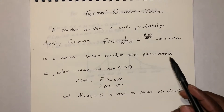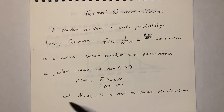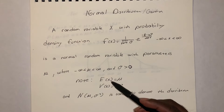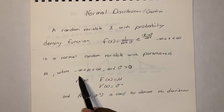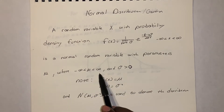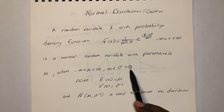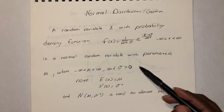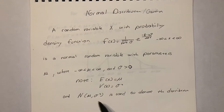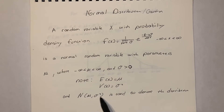This is a normal random variable with parameters μ (the mean, or expected value), where μ is between negative infinity and positive infinity, and σ is positive. The variance of X is σ², and σ is the standard deviation. You'll often see this denoted as N(μ, σ²), so when you see that notation you know you're dealing with a normal distribution.